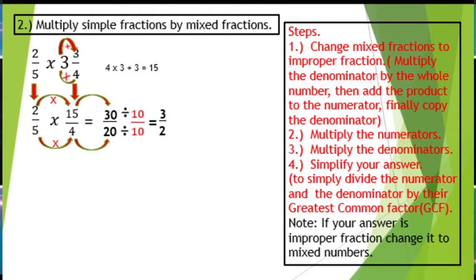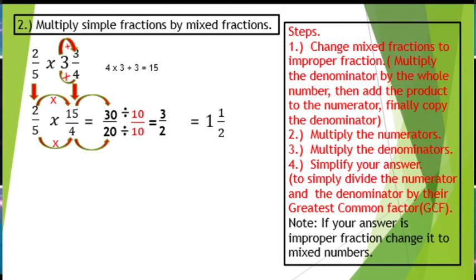But we have an agreement. Every time your answer is an improper fraction, you need to change it into a mixed number or mixed fraction. And what is 3 over 2 as a mixed fraction? That will be 1 and 1 over 2. I hope everything is clear on how to multiply simple fractions by mixed fractions.